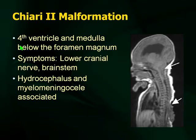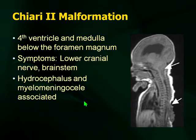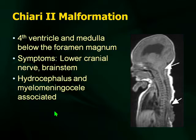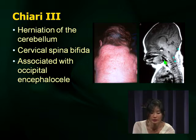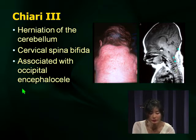Chiari 2 symptoms are lower cranial nerve and brainstem type symptoms, but the important associated symptom is hydrocephalus. The other important association is myelomeningocele — the more likely scenario is you'll get a picture of myelomeningocele and the question will be what it's associated with: look for hydrocephalus and Chiari 2, where you might need acute intervention. Chiari 3 involves herniation even further — associated with cervical spina bifida and occipital encephalocele — but questions on Chiari 3 are much less likely.